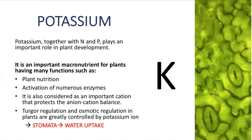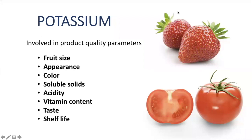If we think about the physiology of potassium in plants and focus on plant production — the business that we care about — what is the function of potassium in yield or quality? Potassium can affect fruit size, appearance, color, soluble solids, acidity, vitamin content, taste, and also shelf life. Sounds important, right?